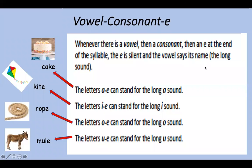Vowel consonant E. So whenever there is a vowel, then a consonant, then an E at the end of the syllable, the E is silent and the vowel says its name — the long sound. Let's just clear something up. A vowel refers to the letters A, E, I, O, U. And a consonant is all the other letters of the alphabet that are not A, E, I, O, U.